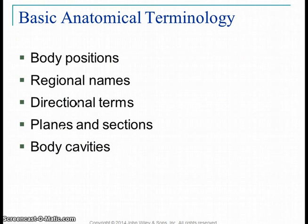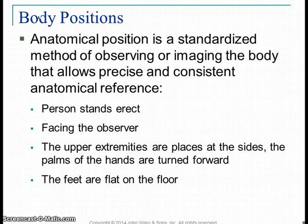Now we're going to start learning basic anatomical terminology — starting to learn the language of anatomy. First, body position. Whenever we compare two parts of the body, we use anatomical position: standing straight up, facing forward, arms down with palms forward. We use this so it's a universally known position. When we say something is superior above something else, we need a reference. If you say a patient has a cut superior on their leg, that could mean different things if they're laying down or on their side.